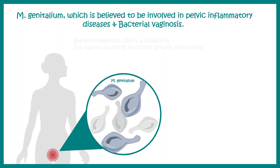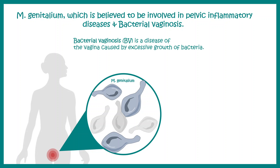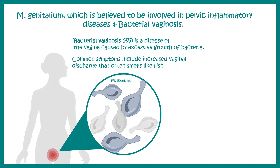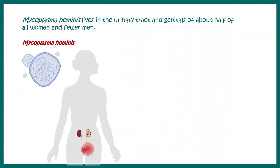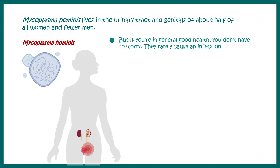M. genitalium can grow on the vagina and it can lead to vaginal discharge if the growth is too much, and often it smells like fish. Mycoplasma hominis lives in the urinary tract and genitals of women and is very common, but very rare in males. They are generally okay and don't cause great harm if the woman has good health, but if she has a weakened immune response then it might lead to infections.